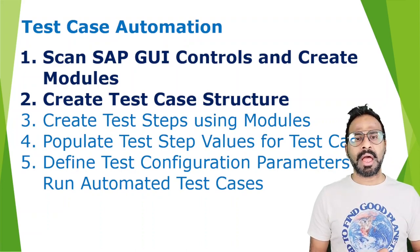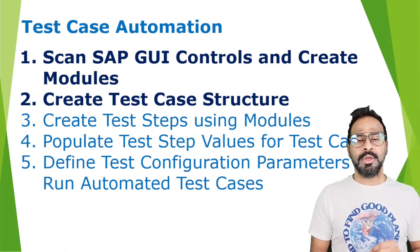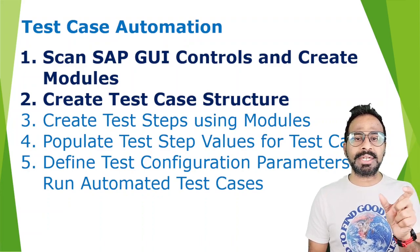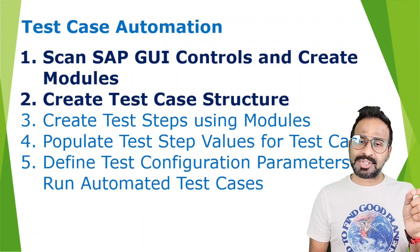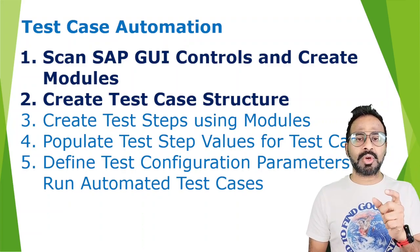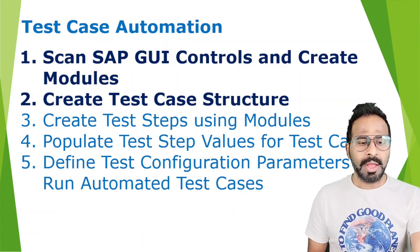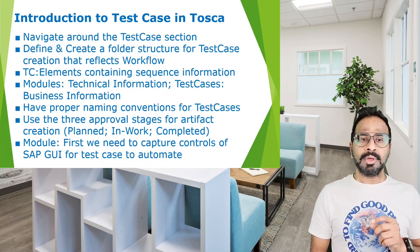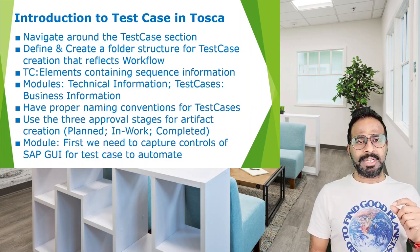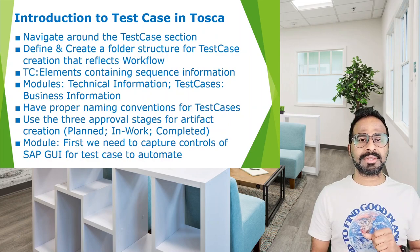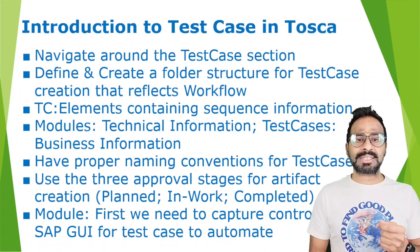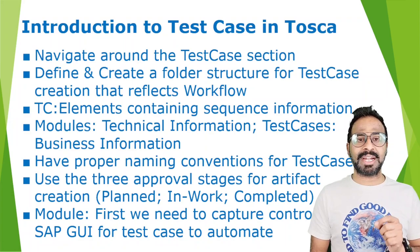In this session I'm going to teach you about the first two steps. We are going to scan your SAP GUI controls and create modules for automating our end-to-end test case. Then we are going to create the test case structure for the test scenario that you would like to automate. So now let's understand what a test case is in Tosca, and we'll navigate the test case section and define the folder structure that reflects your workflow.